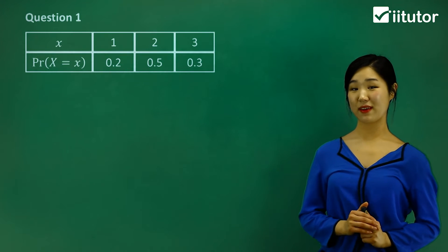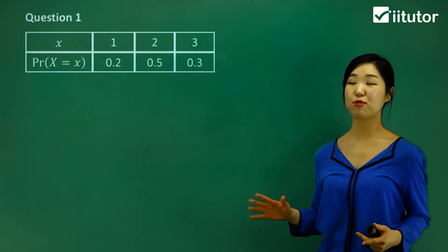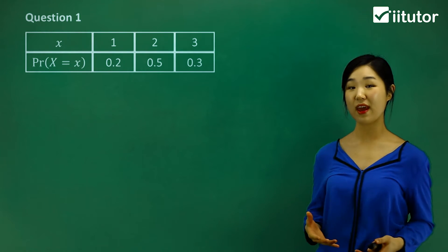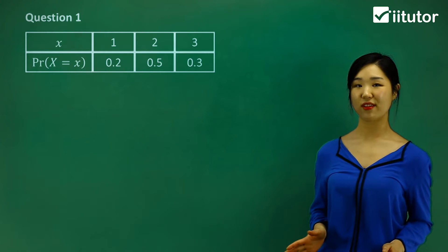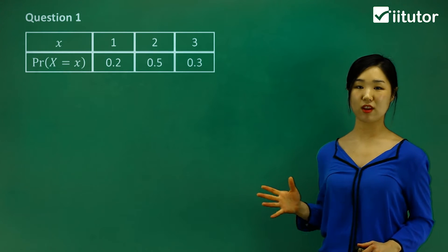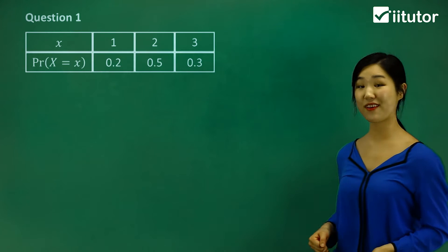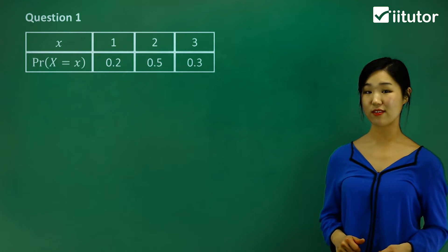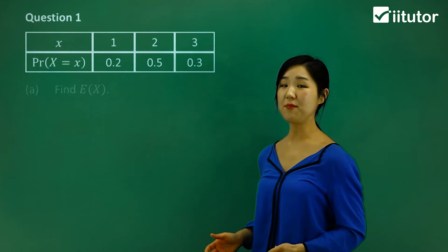Now we're going to be deriving some expectation theorems. I'm going to show you through some calculations how to calculate those and how to obtain some expectation theorems. In question 1, they give us our probability distribution table with the probabilities and the variables. We're going to use that to answer some questions, starting with part A.